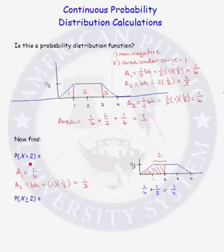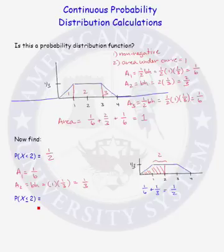We have that the probability that x is less than 2 is equal to 1/2. Our second probability question is: what is the probability that x is less than or equal to 2? In a continuous distribution, it does not matter whether you include the endpoint or not.